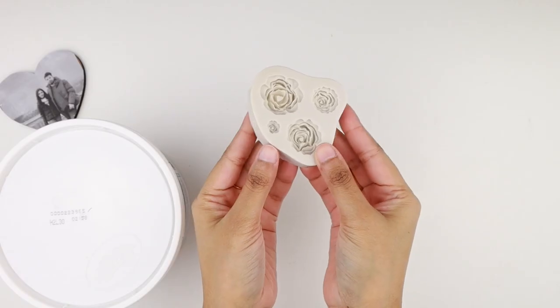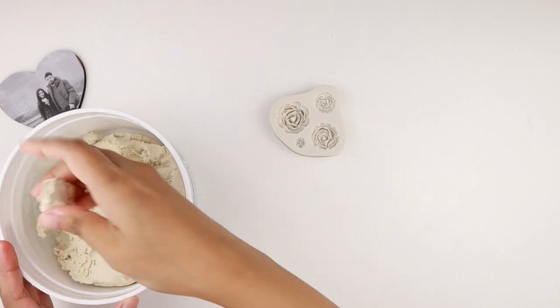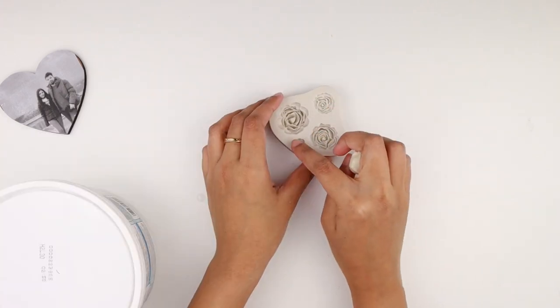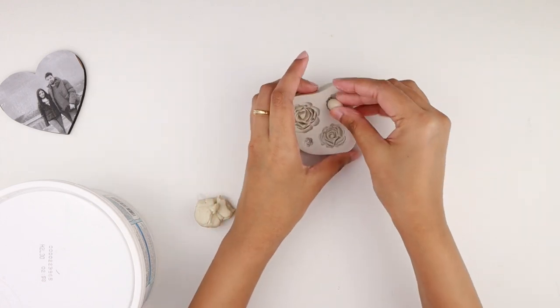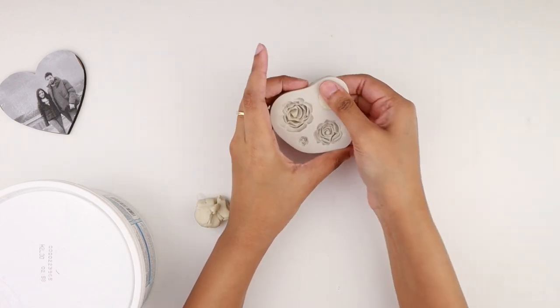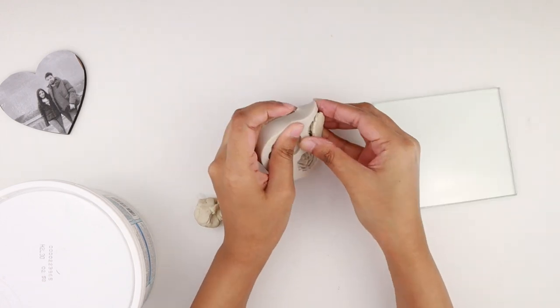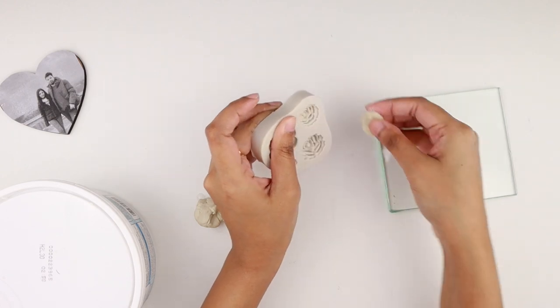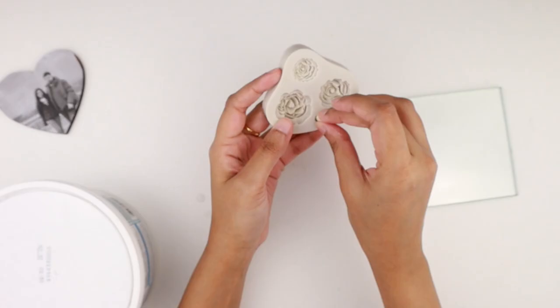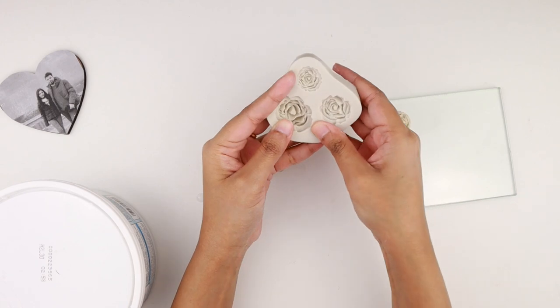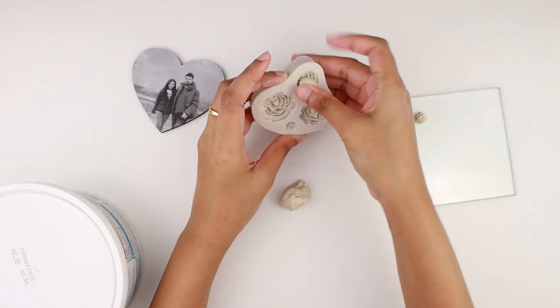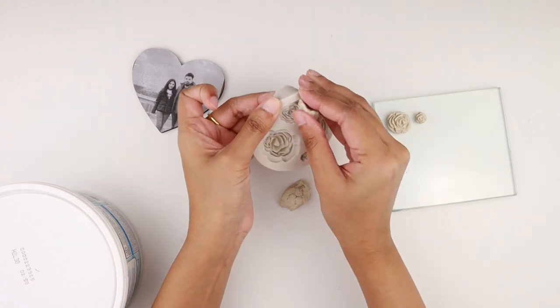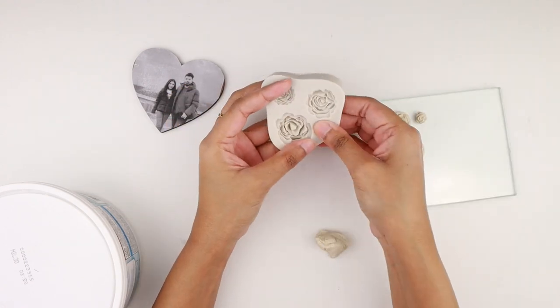Then I took some air dry clay and a rose silicone mold. I grabbed a piece of clay, and I was going to use these two small molds for this DIY. I needed a very small piece of clay and pressed it into the mold, then removed it and placed it on this glass piece. You can also use a piece of parchment paper. For the smaller roses, I used a tiny amount of clay, pressed it into the mold, and carefully removed it. I continued making the roses and made about 10 to 11 pieces with each mold.